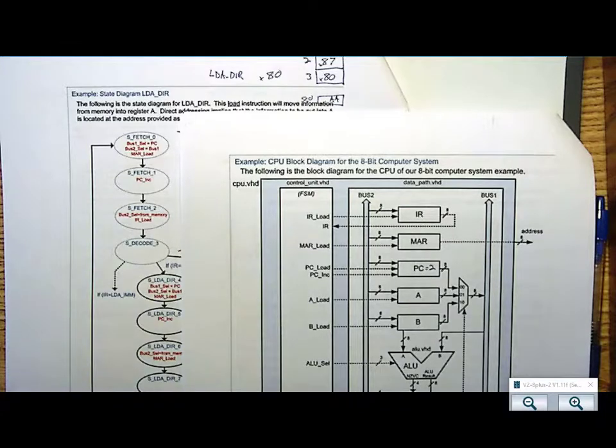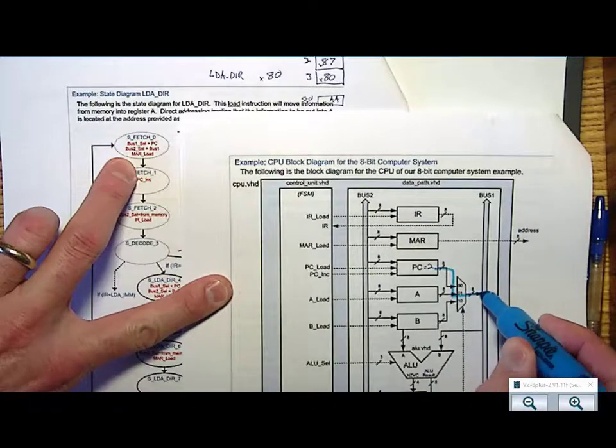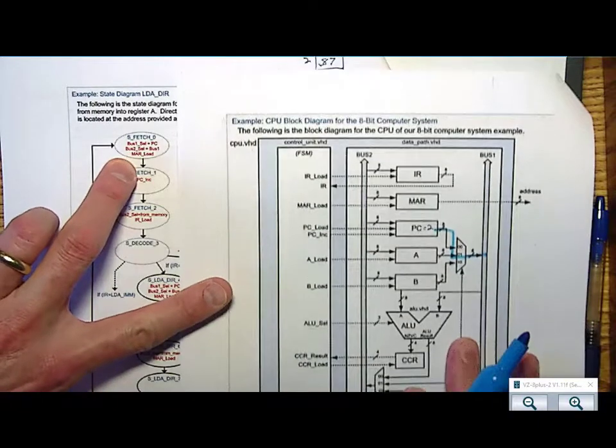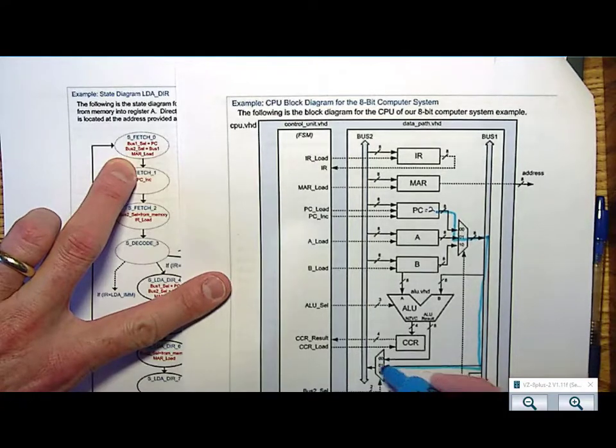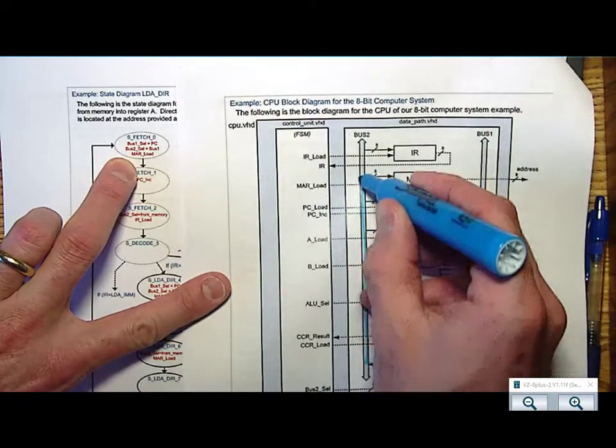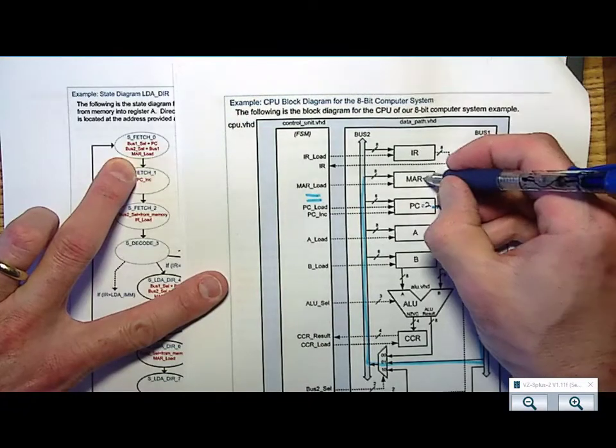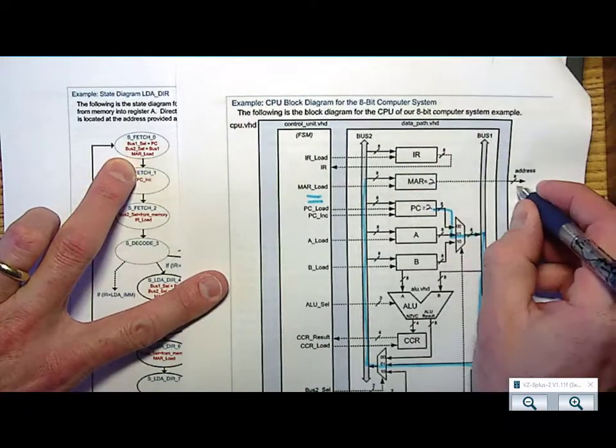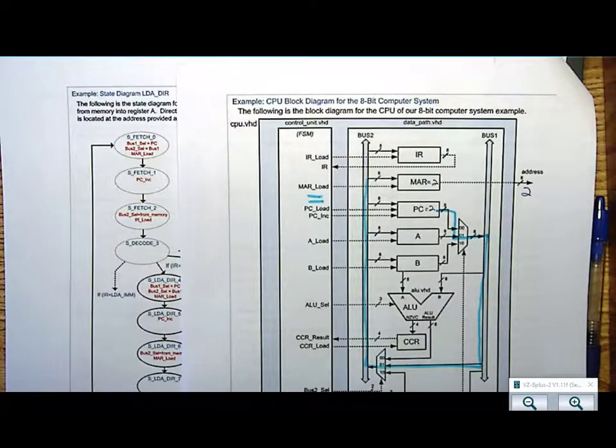I am going to take a state in order to take the program counter through this multiplexer to get on bus 1. I will then take this multiplexer and take bus 1 to put on bus 2, and I will then perform a MAR load. MAR will now be loaded with the value 2, which will be provided to the address to the memory system and produce the opcode.